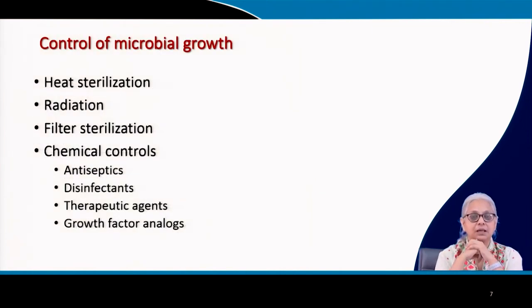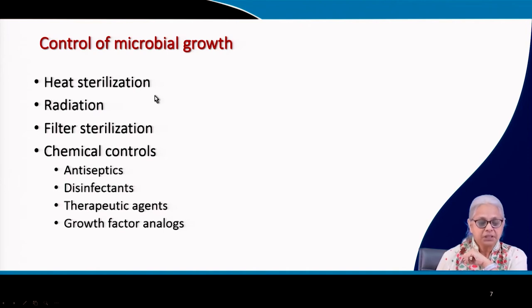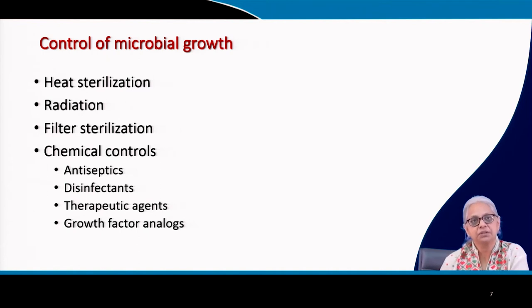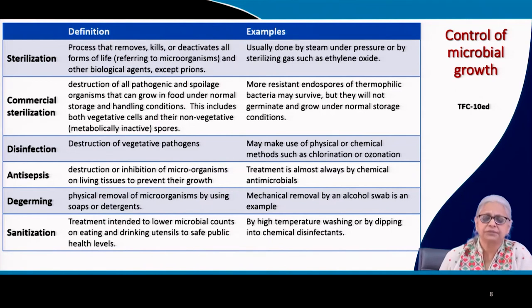Let us come to the next point — how do we control microbial growth? There are several different methods. The first is heat sterilization, followed by radiation, filter sterilization, and chemical control. Within chemical control we have antiseptics, disinfectants, therapeutic agents, medicines, and growth factor analogs. Let us take a look at some definitions before we go into the methods.